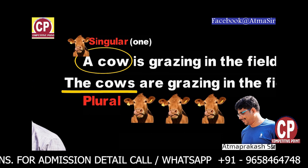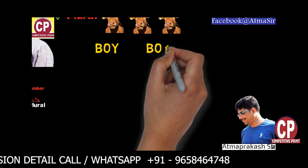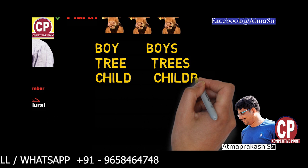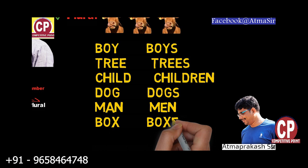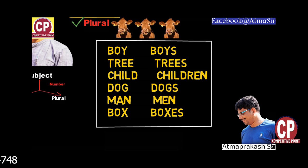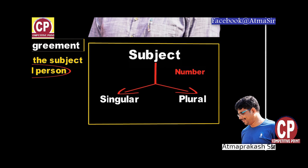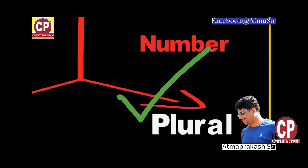For example, boy is the singular form, but boys is the plural form. Similarly, tree/trees, child/children, dog/dogs, man/men, box/boxes are the singular and plural forms of respective nouns. The bottom line is, when we consider the number of a subject, we determine whether the subject is singular or plural. This concept of number plays a vital role in subject-verb agreement.